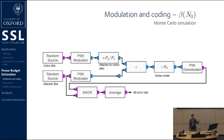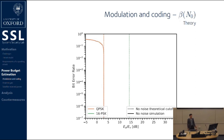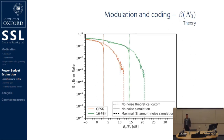We set up a Monte Carlo simulation for this setup and plotted bit error rates against the attacker-to-victim received power to see what kind of success rate you need at the modulation encoding level. We plot our mathematically proven zero-noise cutoff values and perform simulations that show that overshadowing 16PSK in the absence of noise requires more power for the attacker relative to the victim. When you add noise up to the limit of channel capacity, the effect still remains, although the attacker has to work harder.